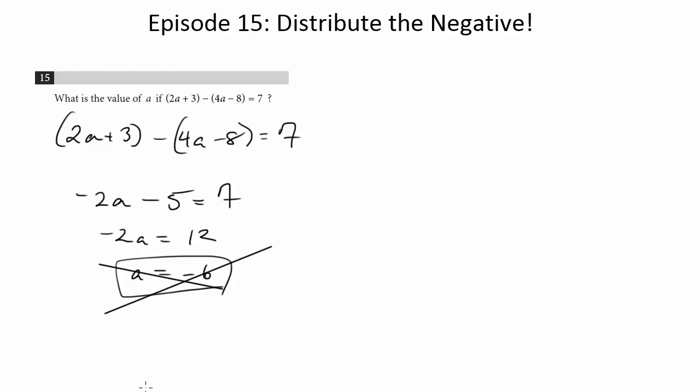Now, unfortunately, you can't even grid that in, so you know this would be wrong. But negative 6 is not the answer. And what is the problem? The problem is the student forgot to distribute the negative.